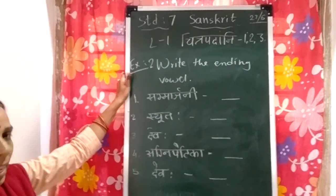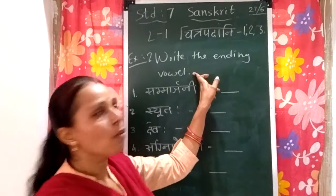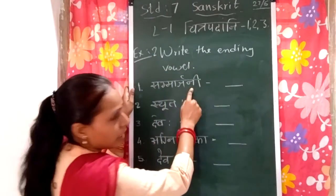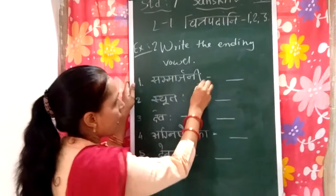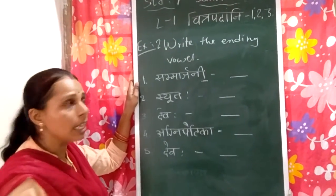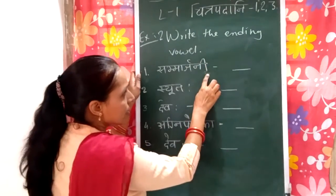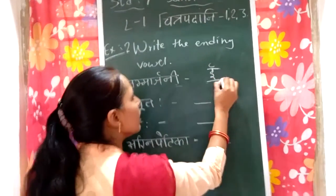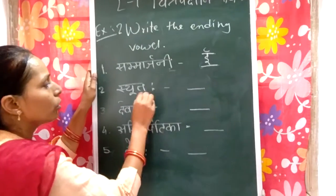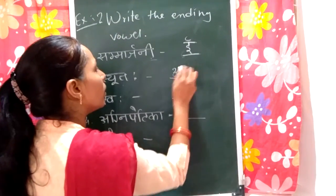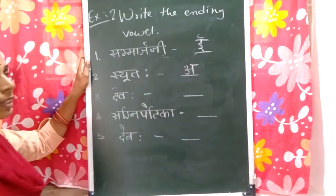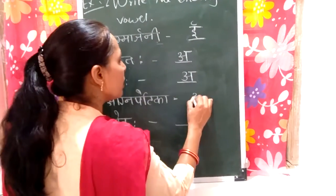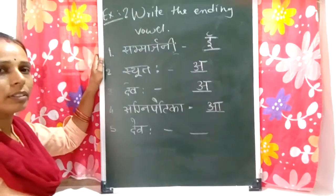Now exercise 2. In exercise 2 you have to write the ending vowel of these words. First word: samarjni — the ending vowel of samarjni is dīrgha 'ī', as 'ni' has a dīrgha 'ī'. So the ending vowel is dīrgha 'ī'. Shutah — the ending vowel is 'a'. Devah — the ending vowel is 'a'.